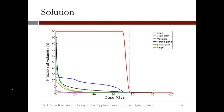We solved this optimization problem, and this plot shows the results. On the x-axis is the dose in gray, and on the y-axis is the fraction of voxels that received that dose or higher. Each line corresponds to a different structure. We can see that for the tumor, which is shown as the red line, 100% of the voxels get a dose of 70 gray, and 0% of the voxels get a dose of more than 77 gray. This is what our constraint specified. While none of the critical structures are getting very high doses, it looks like the mandible, which is shown as the blue line, is receiving the highest dose of the healthy organs.